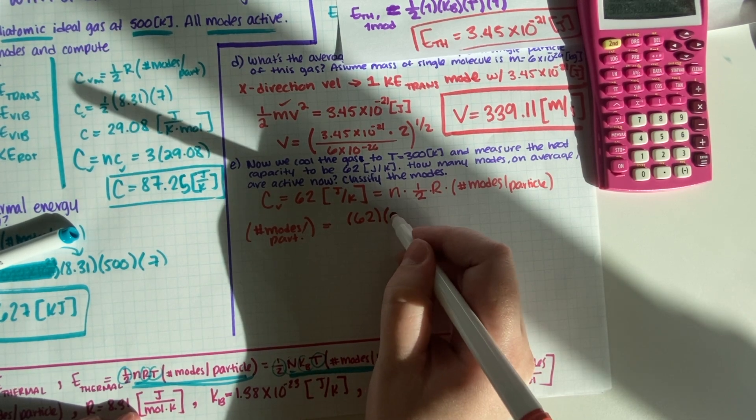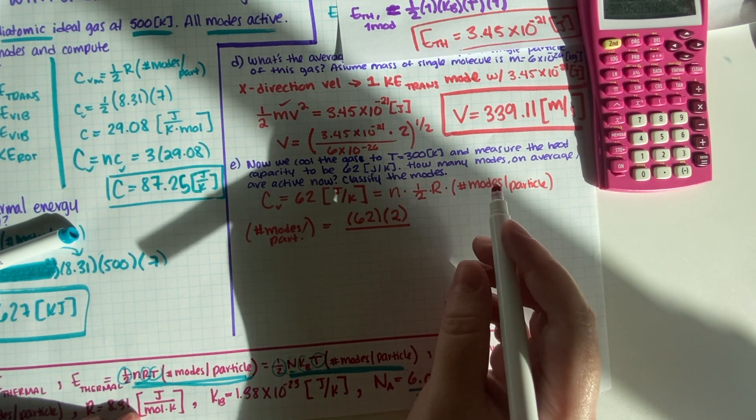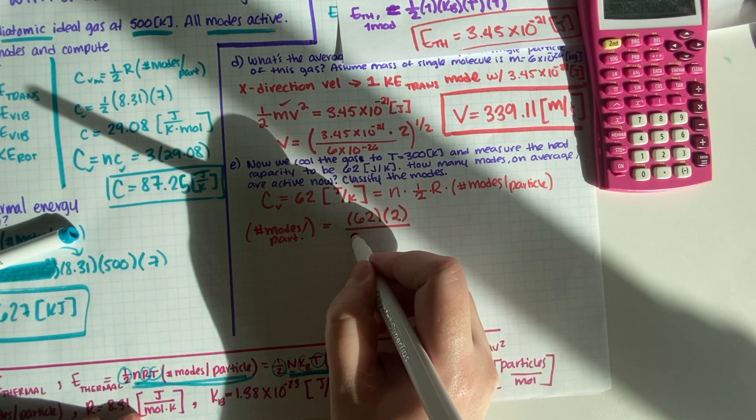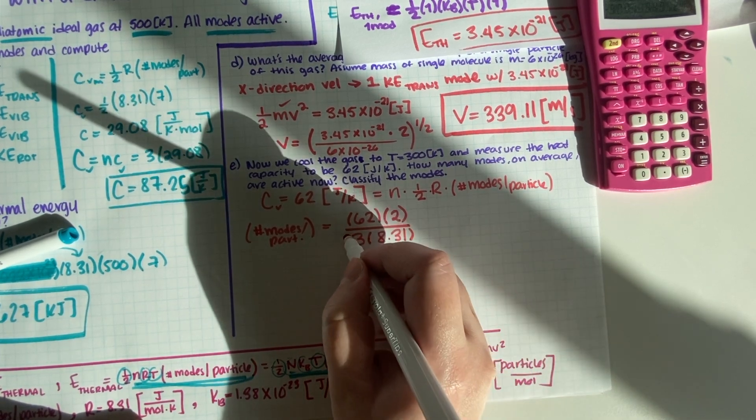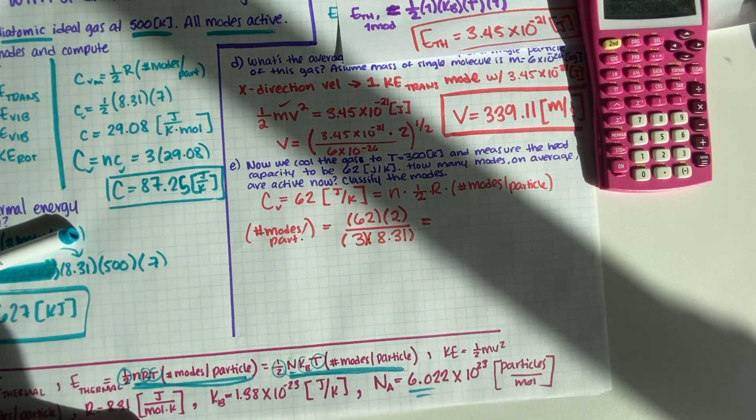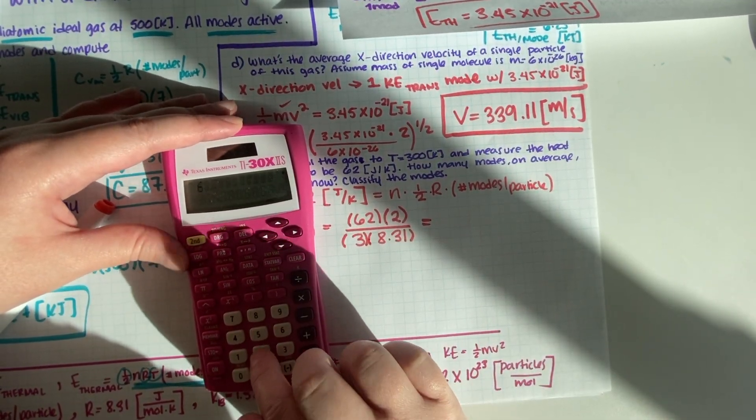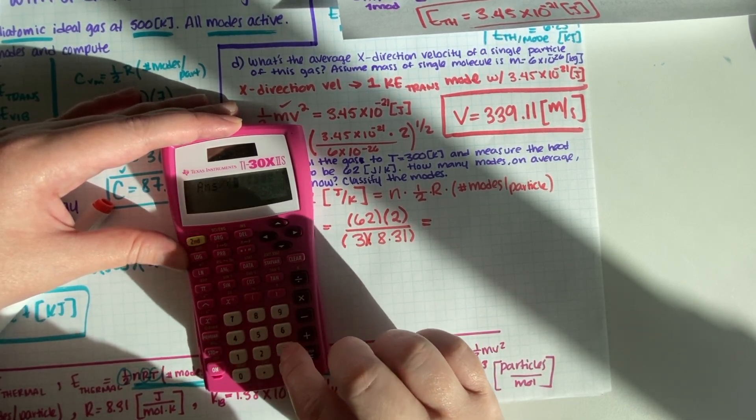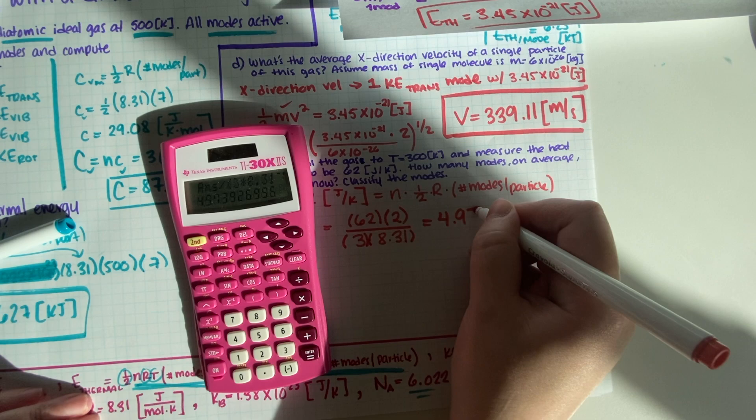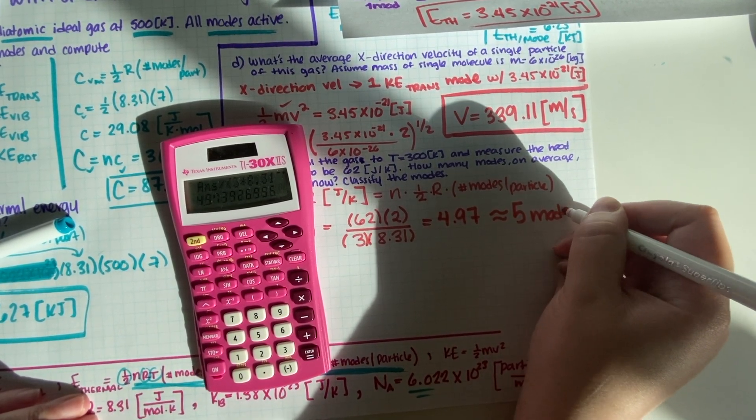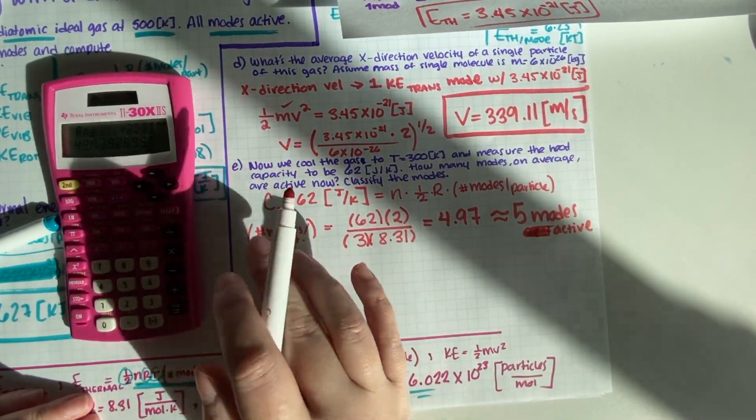So that is 62 times 2 and then we want to divide that by 3 times 8.31, so that is 4.97 so basically around five modes are active. And we have to classify them so five modes are active.